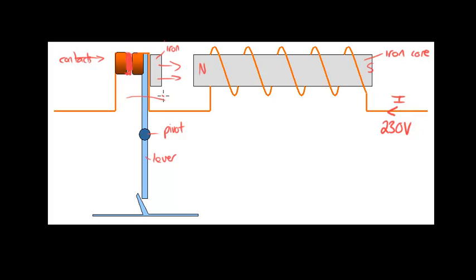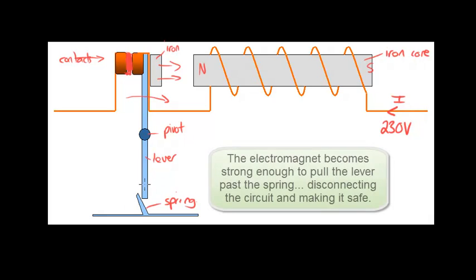That makes the lever pivot past this spring here, this little springy leaf. And so the lever is attracted towards the electromagnet and it breaks the contacts.